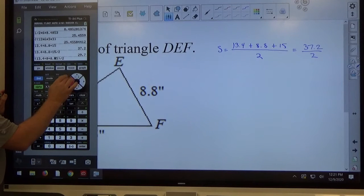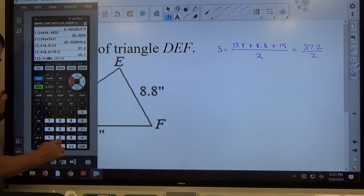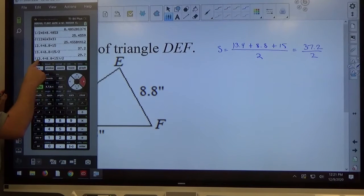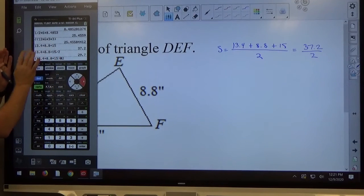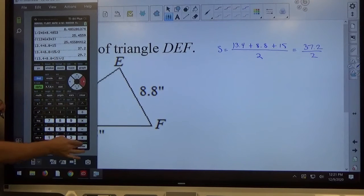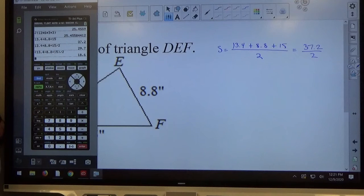Helps to type it in right, too. 13.4 plus 8.8 plus 15 in parenthesis. That means do this first and then divide by 2. That's the right value. So notice the difference between this and this. Here are parentheses, here are no parentheses. Here are right answers, here are wrong answers. So be careful.